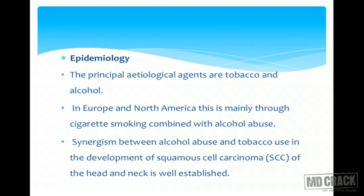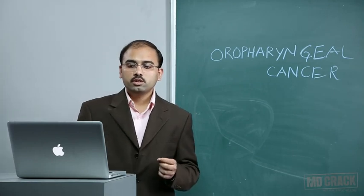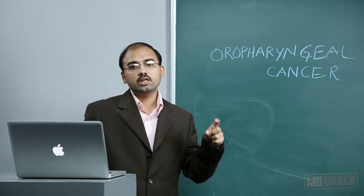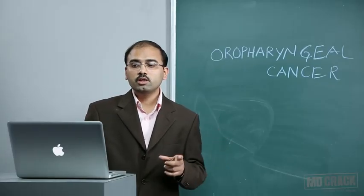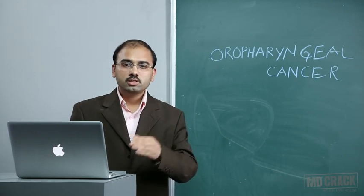Whenever you have two etiological agents occurring in the same patient, they may multiply the effect of carcinogens. The risk factors associated with cancers of the head and neck are tobacco, alcohol, oregano or paan masala, human papilloma virus, Epstein-Barr virus, Plummer-Vinson syndrome, and poor nutrition. All these factors should be kept in mind, as you may be asked which etiological agents are associated with malignancies of head and neck. Oral malignancies are mainly associated with all these etiological factors.